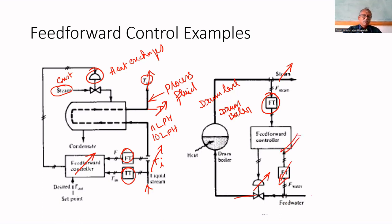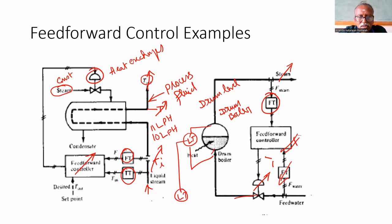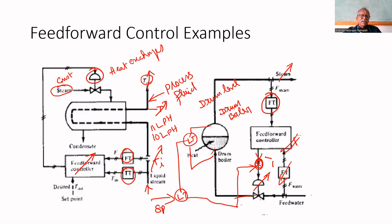These two feedforward actions cannot be implemented alone. We must also implement a drum level feedback controller. A level transmitter measures the drum level, which is given to a level controller along with the set point, and this controller adjusts the inlet valve. A summing junction is used to add the outputs of the feedforward controller and the level controller together. The feedback controller takes action whenever there is any change in level — regardless of cause. The feedforward controller takes advance action whenever it detects a change in steam flow rate or inflow rate. Both outputs are added together for complete control.